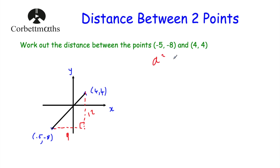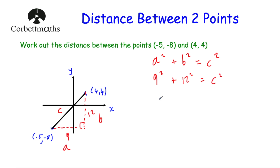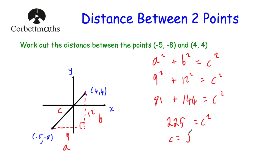So let's write down Pythagoras's theorem: a² + b² = c². Label the sides — a and b are the two shorter sides, and c is the hypotenuse opposite the right angle. Substituting in: 9 squared plus 12 squared equals c squared. 9 squared is 81, plus 12 squared is 144, and that's equal to c squared. 81 plus 144 equals 225, so c squared equals 225. To find c we square root it: c equals the square root of 225, which is 15. So the distance between the points (-5, -8) and (4, 4) is 15.